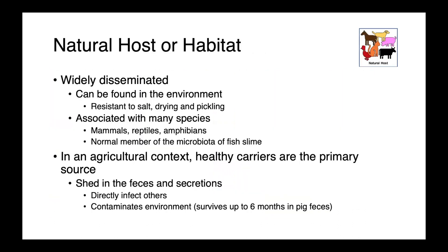Erysipelothrix rhusiopathiae is widely disseminated. It can be found in the environment, and it's actually quite resistant to high salt concentrations, drying, and even pickling. It's associated with many animal species — we see infections in mammals, birds, reptiles, amphibians, and it's actually a member of the normal microbial community of fish slime.